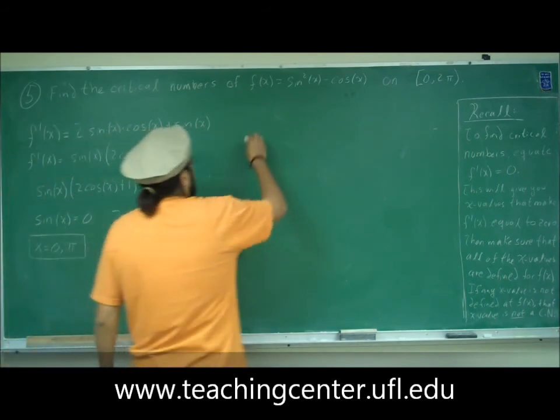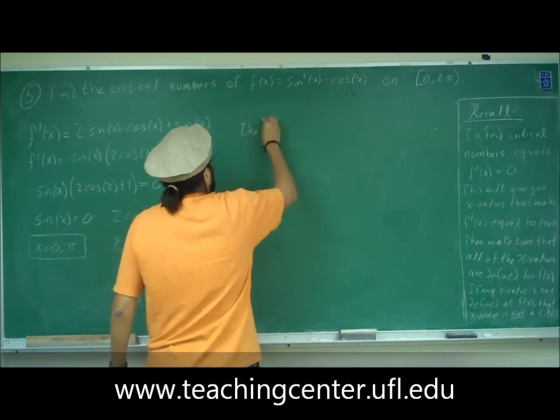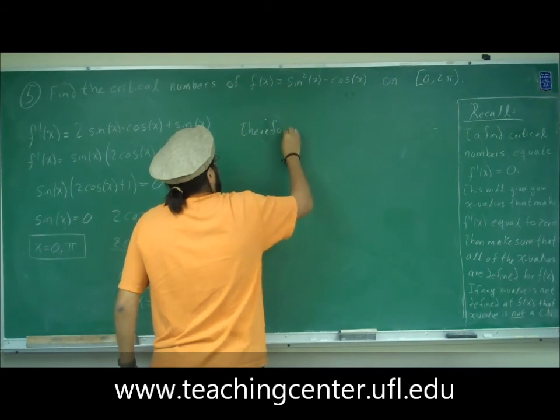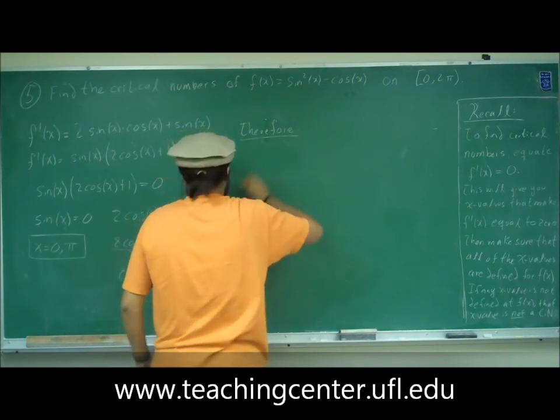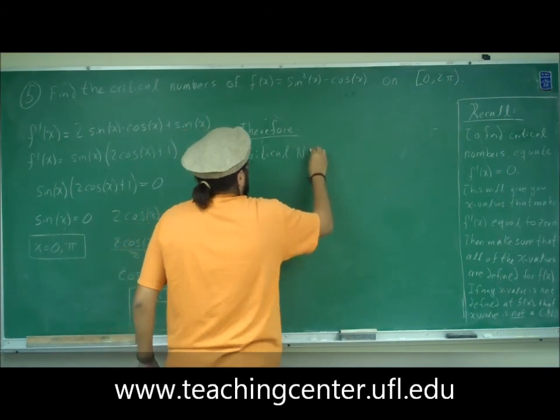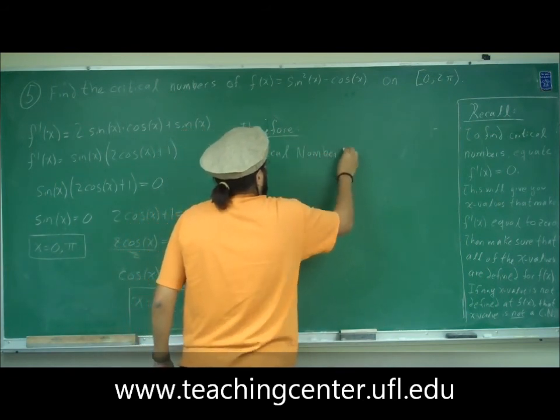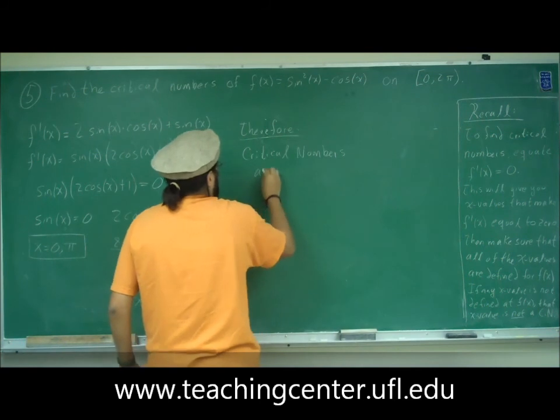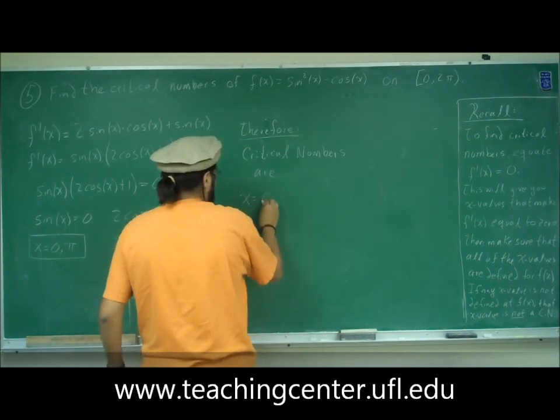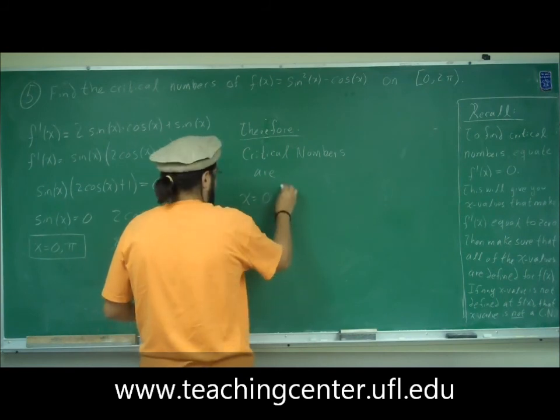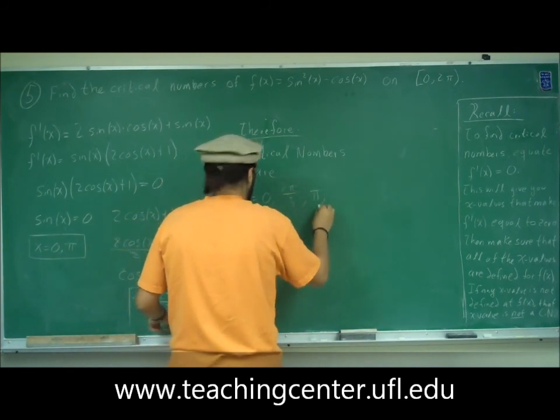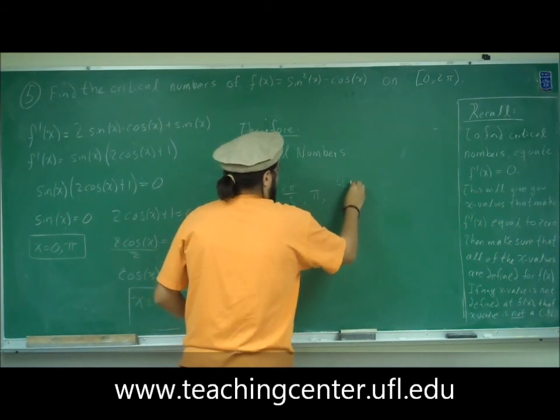Therefore, our critical numbers are x is equal to 0, two pi over three, pi, and four pi over three.